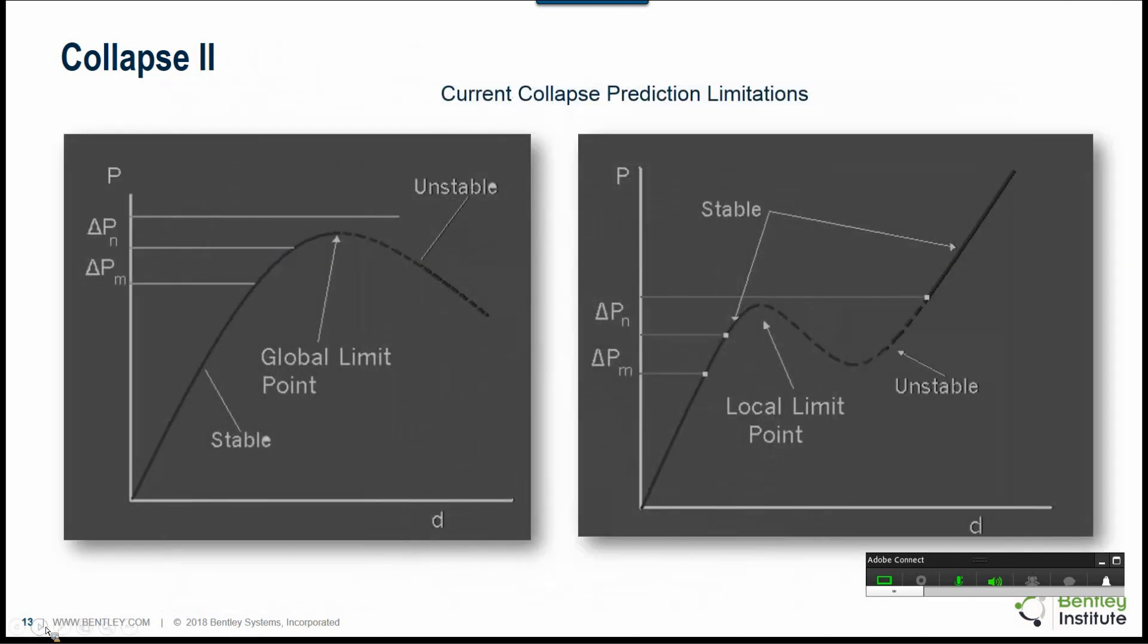These are the limitations of the current collapse program out there. In the current collapse, once a global limit point is encountered, the program is no longer able to go any further. In other words, the program solution will diverge.